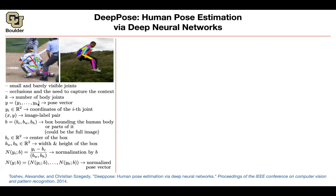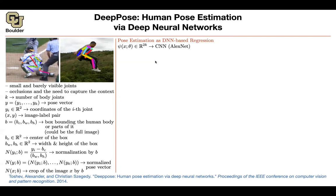You do this for every joint i from 1 to K. You can also normalize the image itself by cropping it according to the bounding box. Now everything is normalized — this is an important step because images can have different resolutions and people appearing in them can vary in size. You can then formulate pose estimation as a regression problem.